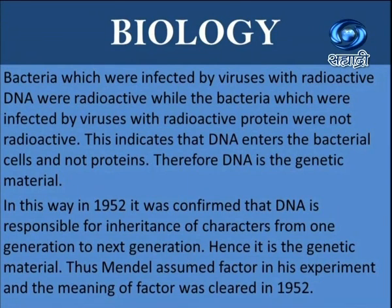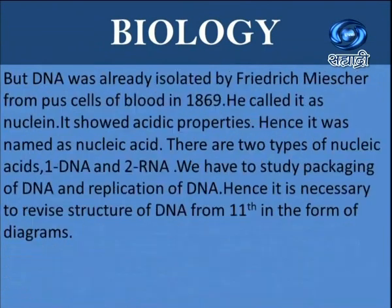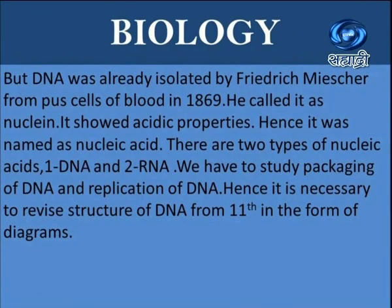Thus, Mendel's assumed factor in his experiment, and the meaning of factor was cleared in 1952. These three experiments proved that DNA is the genetic material. Interestingly, DNA was already isolated by Frederick Miescher from the pus cells of blood in 1869. He called it nuclein. It showed acidic properties, hence it was named nucleic acid. There are two types of nucleic acids: DNA and RNA.